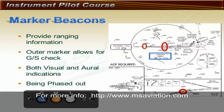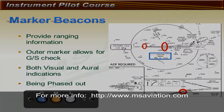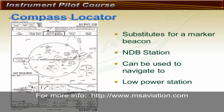Where radar service is available, marker beacons are being phased out of ILS systems. Sometimes an ILS system will have a compass locator instead of a plain marker beacon. The compass locator is a very low-power NDB station paired with a normal marker beacon. You must have an ADF receiver to use the NDB functionality of a compass locator. The advantage is that because it's an NDB, you can navigate to and from it. At Livermore Airport, for example, the missed approach procedure uses the NDB, and the pilot must have an ADF receiver or GPS to perform the missed approach.